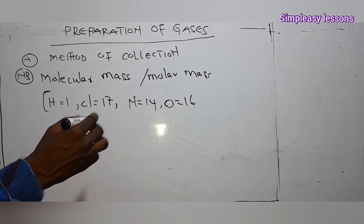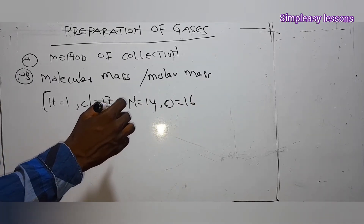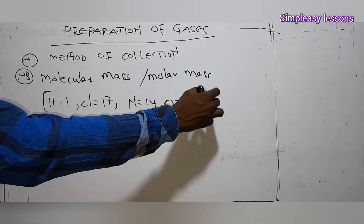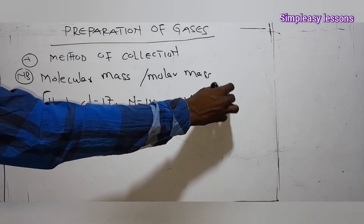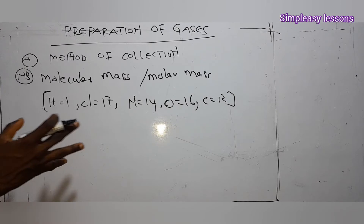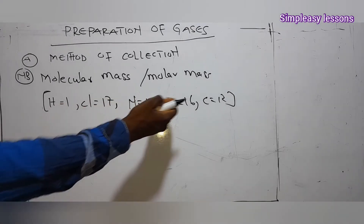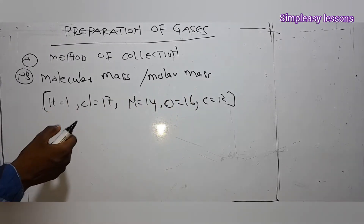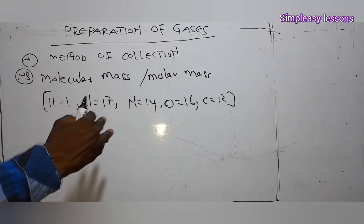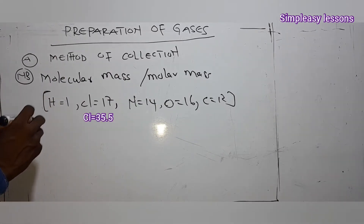If oxygen is 16, then for carbon dioxide, carbon is 12. These are the atomic masses — or their individual masses — that you use when you need to find a molar mass or formula mass.